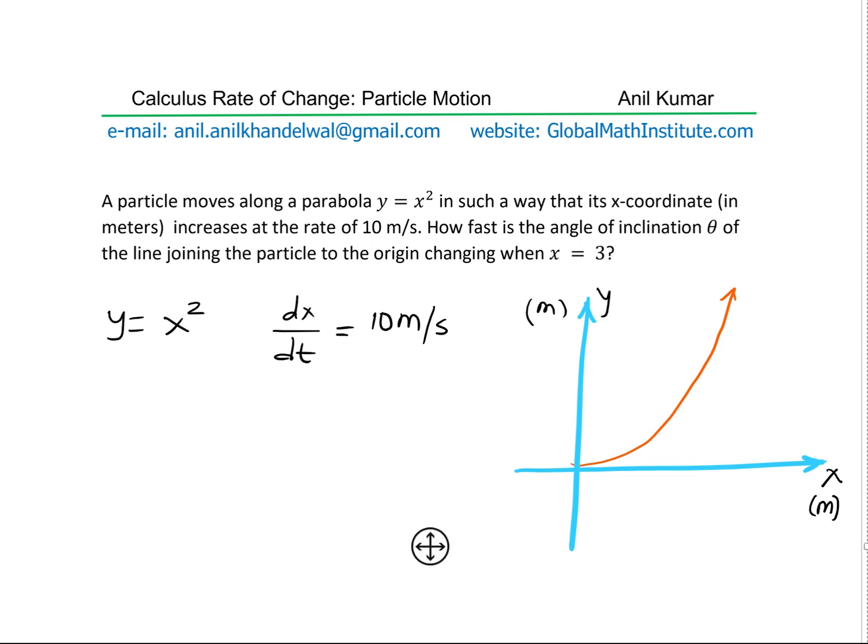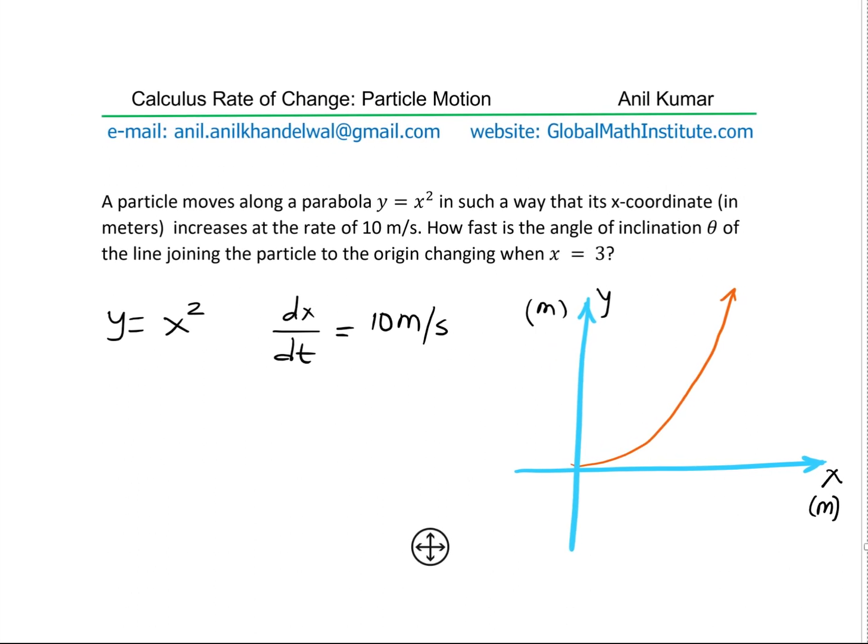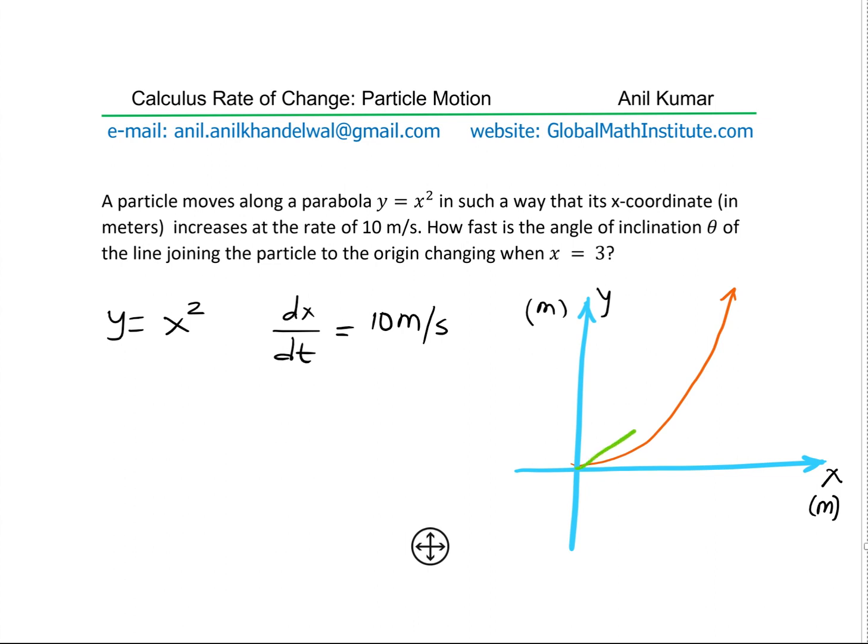And what we need to find is how fast is the angle of inclination theta of the line joining the particle to the origin changing. So let's sketch that part. Let's say from the origin we have a line joining like this. So let this be the position when x is 3 for us.